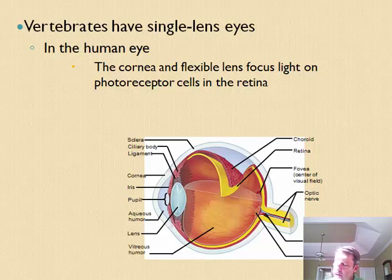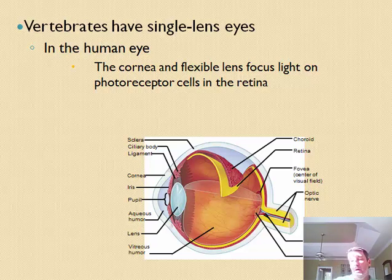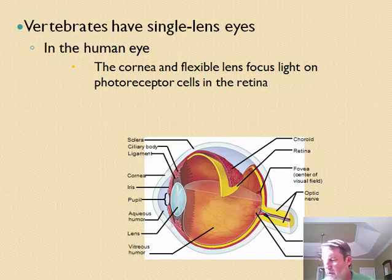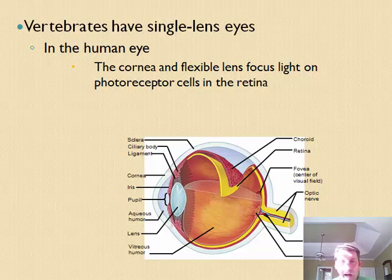This continues our lecture on the nervous system. We have just a couple of things to finish up, and that is two main structures of the human nervous system — and also in animals and even invertebrates we see these structures — and that is the eye and the ear. These are major physical structures of the body where we have a lot of nerve endings that pick up information. We're going to start with the eye. Vertebrates have a single lens eye.